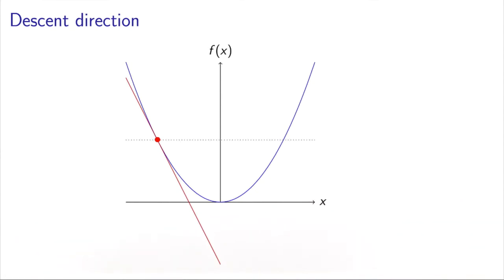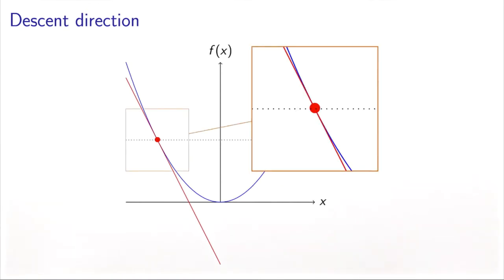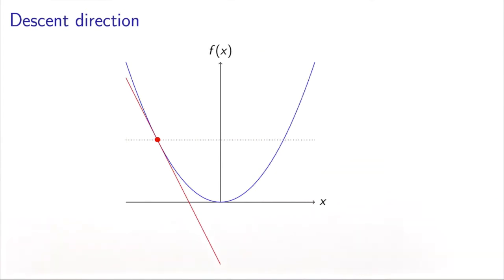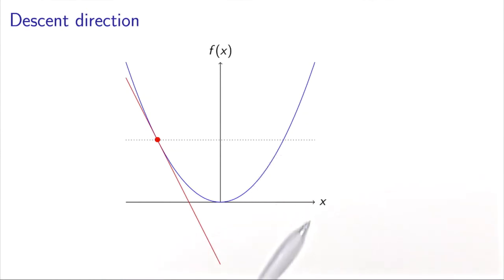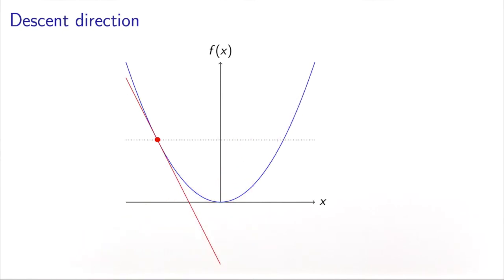This can be seen by drawing a horizontal line. Everything which is better than f of x in terms of the objective function will be below that line. If we zoom in a little bit, we see that as soon as we leave x going to the right, we achieve values of the function that are lower than f of x. But of course, you cannot go too far. If you continue to follow this direction, at some point you will reach values of x that correspond to values of f that are higher than where you started.